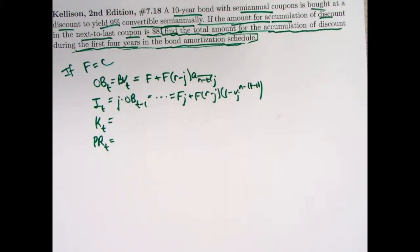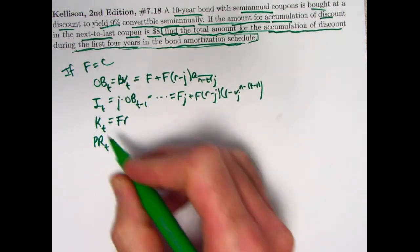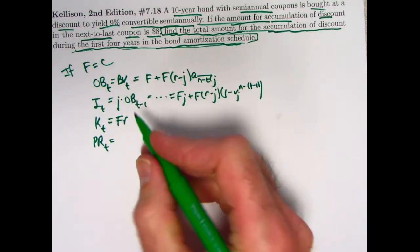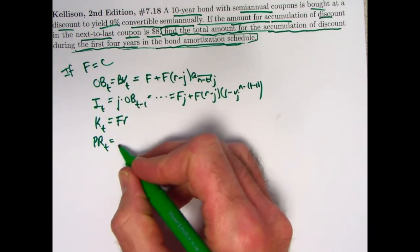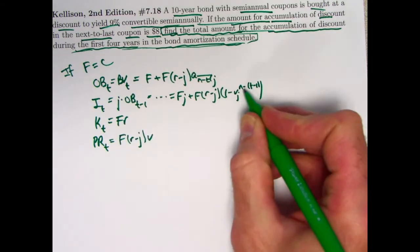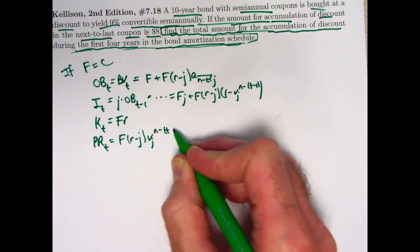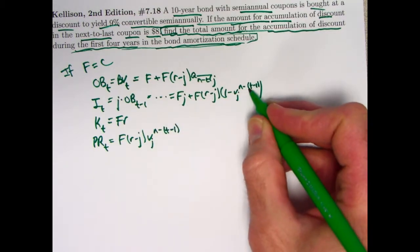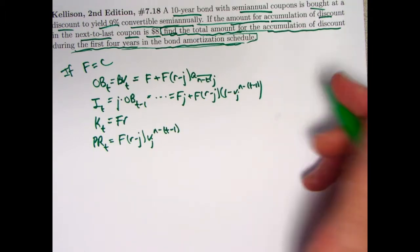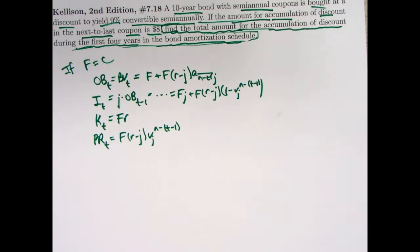This is the formula that we used when t is 0, when you have the initial price, this is n instead of n minus t. The interest at time t is the yield rate per half year, in this case, times the outstanding balance at the previous time. And through a little bit of algebra, you can simplify that to f times j plus f times in parentheses r minus j times in parentheses 1 minus v_j to the n minus in parentheses t minus 1 power. That's quite a mouthful. Again, watching videos 107 through 109, I talk about these formulas, you'll see them derived, so that would be good to do if you have it.